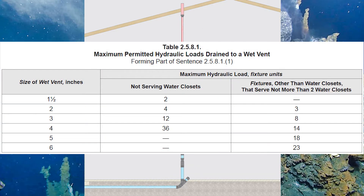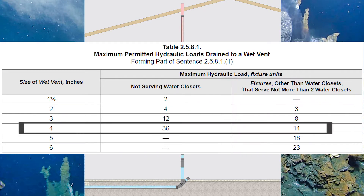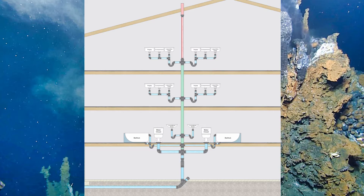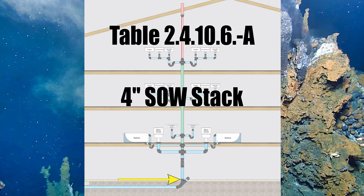So I look at table 2581. I am serving water closets so I use the right-hand column. A four-inch wet vent serves up to 14 fixture units, so that should be good for us. The size of our wet vent never changes, so right from the top all the way down will be four inches in size. We'll just have a regular soil away stack continuing beneath the water closet trap arms, and if you look at table 24106A, four inches is plenty big for that.